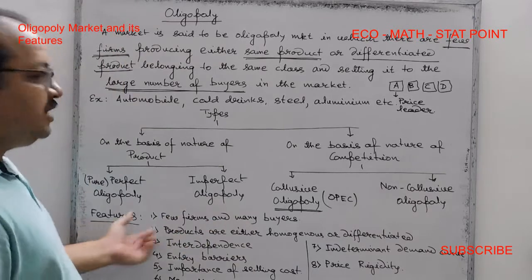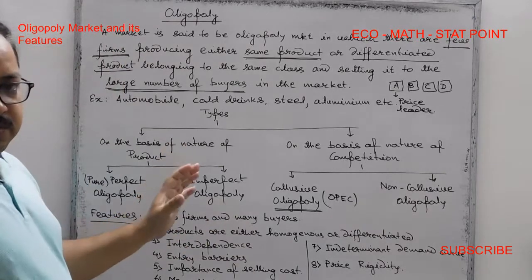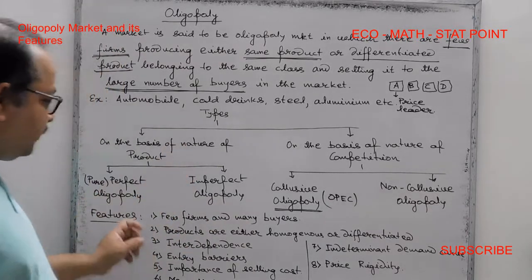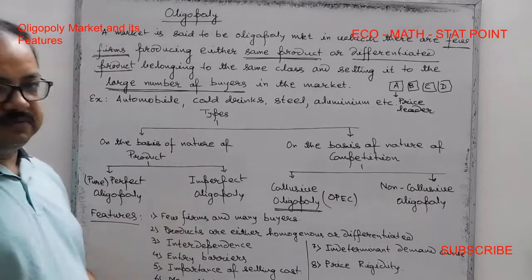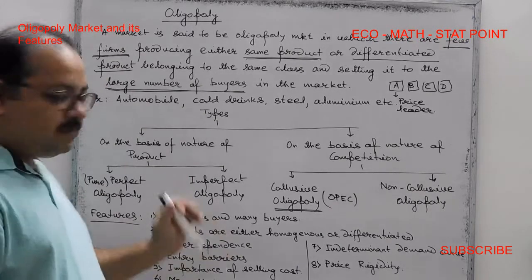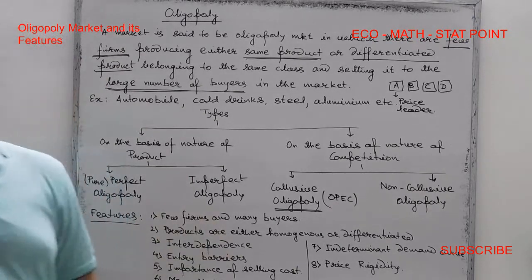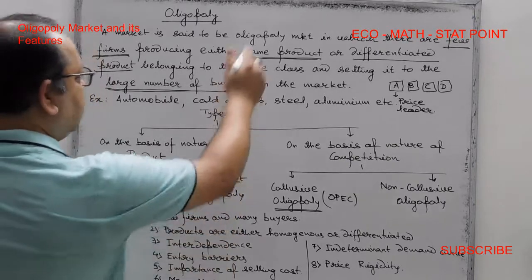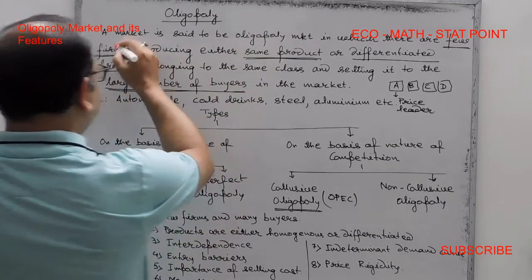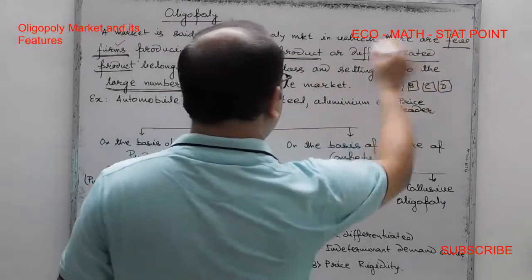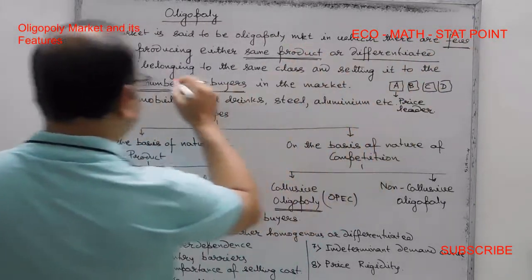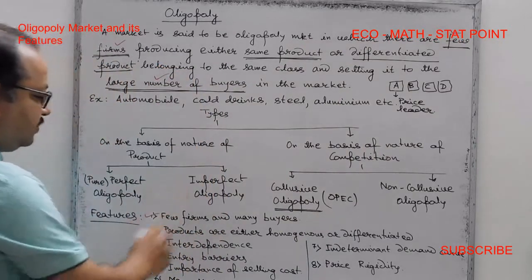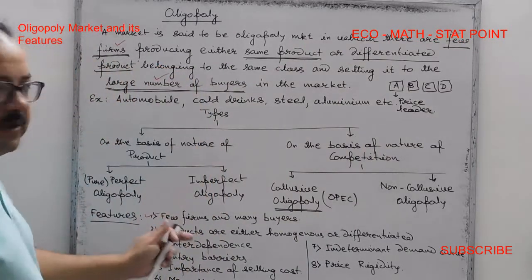Now let us look at the features of the oligopoly market. The first feature is few firms and many buyers. In this market structure, only a small number of firms operate while the number of buyers is large.